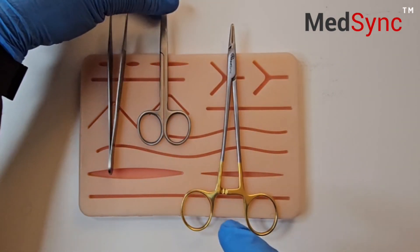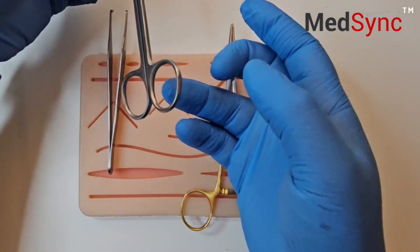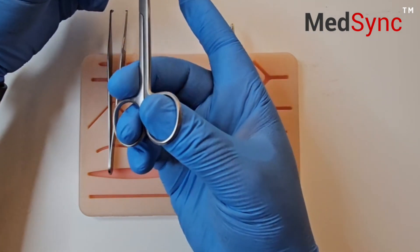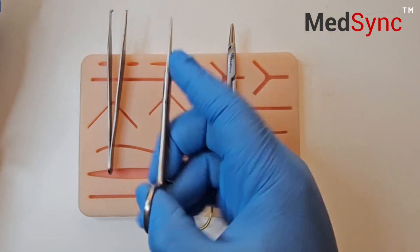The scissors. You hold this just like you do the needle holder. Ring finger, thumb, middle finger on the angle, index finger along the body.